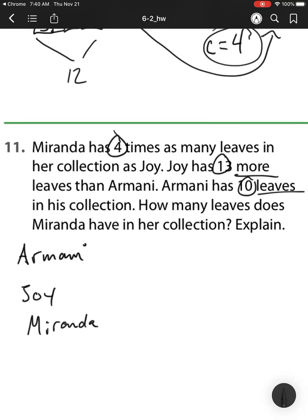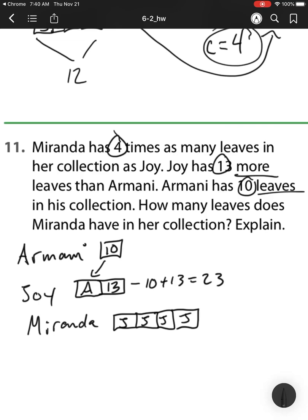So Miranda has 4 times as many leaves as Joy. So that means Miranda is going to have 4 boxes. I don't know what they are yet, because I have to figure out what Joy's box is. Joy has 13 more leaves than Armani. So she's going to have Armani's plus 13. So Armani has 10 leaves in his collection. So now I have enough. I know Armani's is 10. So Joy's becomes 10 plus 13.